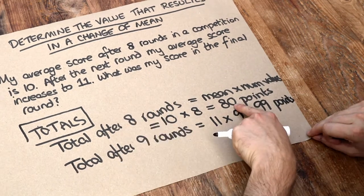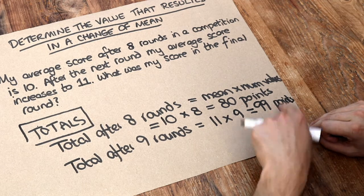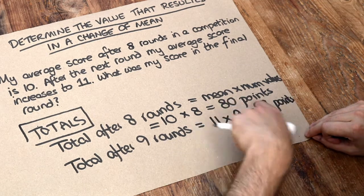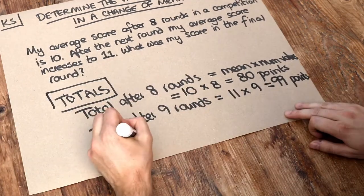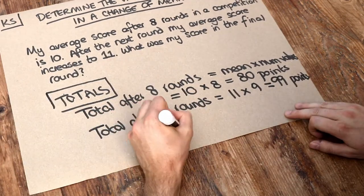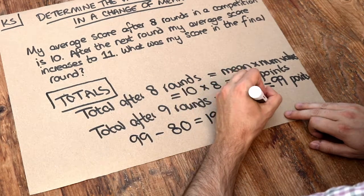Now if after 8 rounds I had 80 points and after 9 rounds I had 99 points, then what I got in round 9 must have been the difference between those two totals, what the total increased by. So we just need to do 99 minus 80 and that means I must have got 19 points in that last round.